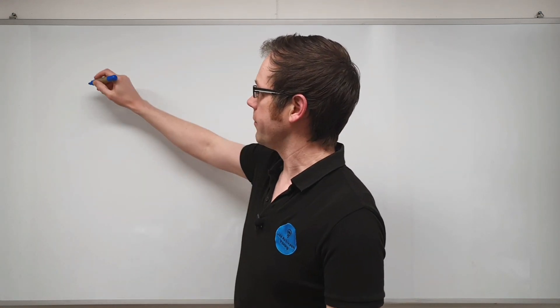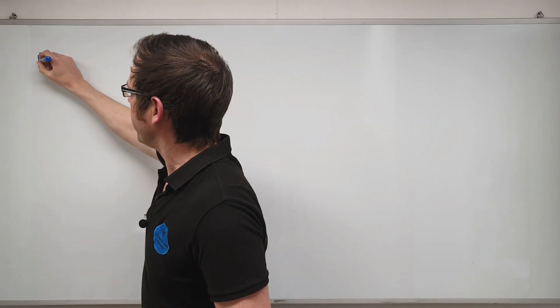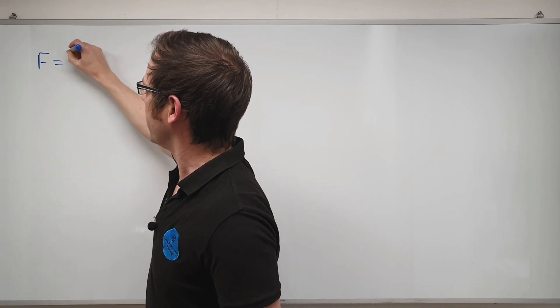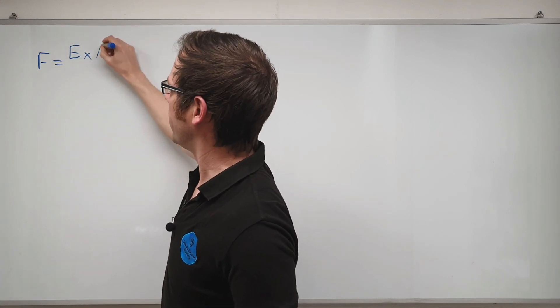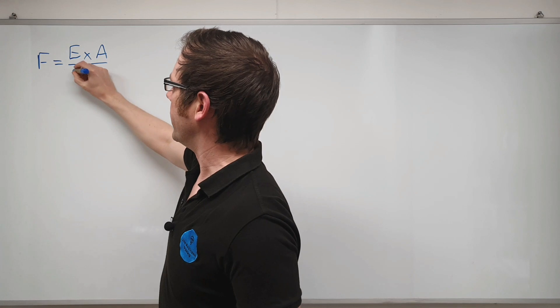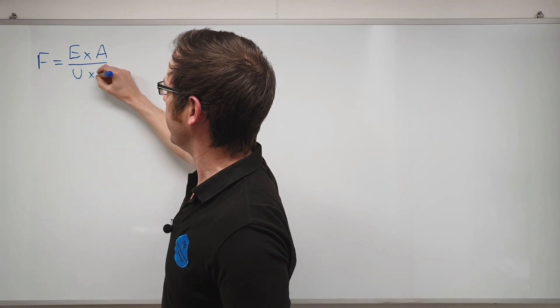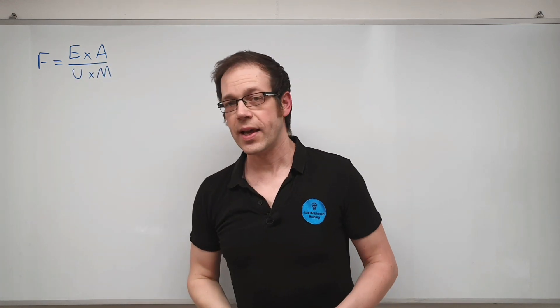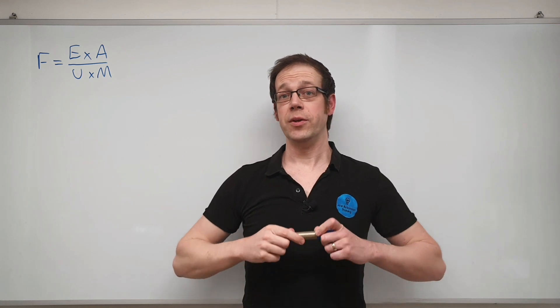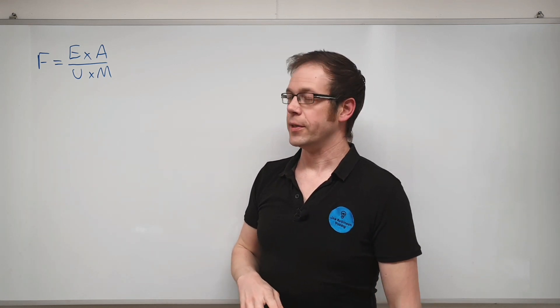So the first thing I'm going to do is I'm going to put the new formula up on the board and it very simply looks like this. It's just F is equal to E multiplied by A divided by U multiplied by M. So that's our new formula that we're going to be using and it's really important that we get that firmly fixed in our minds.